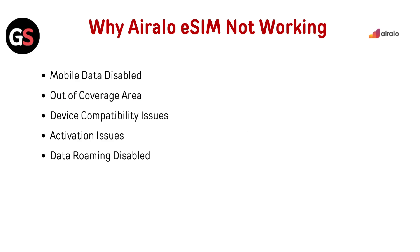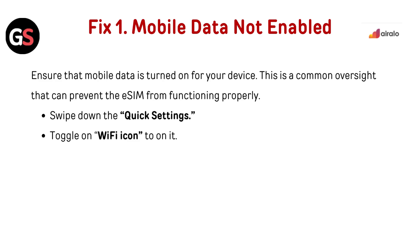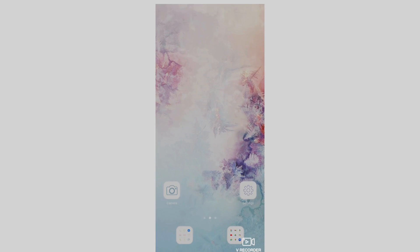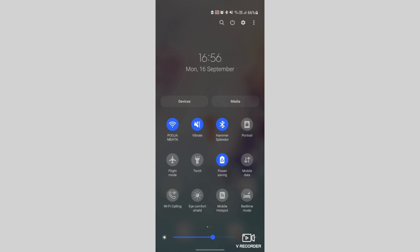Your Airalo eSIM may not be working because of mobile data disabled, out-of-coverage area, device compatibility issues, activation issues, or data roaming disabled. Fix 1: Mobile data not enabled. Ensure that mobile data is turned on for your device — this is a common oversight that can prevent the eSIM from functioning properly. Swipe down the quick settings and toggle on the mobile data icon.